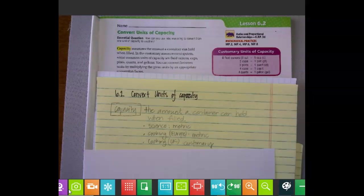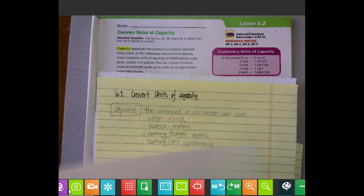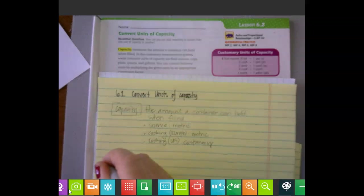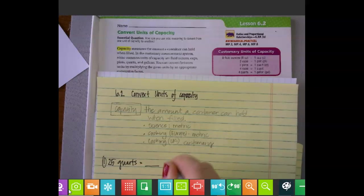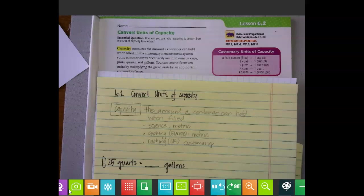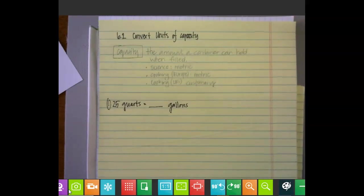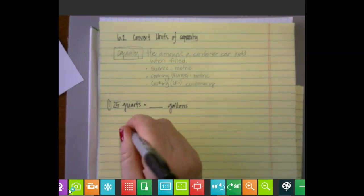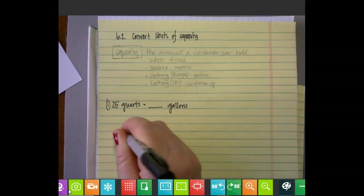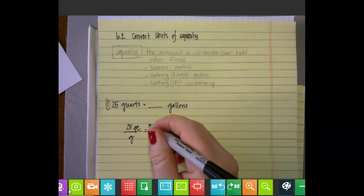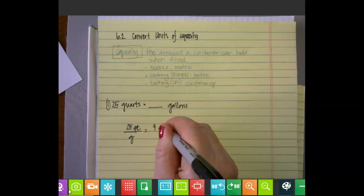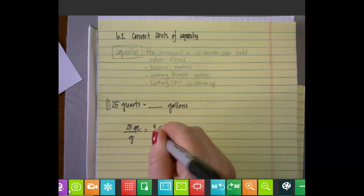Let's get to our first example. We will be converting 25 quarts into gallons using ratio reasoning. I like to set that up as 25 quarts over G for unknown gallons. On the other side, we know that four quarts equals one gallon.